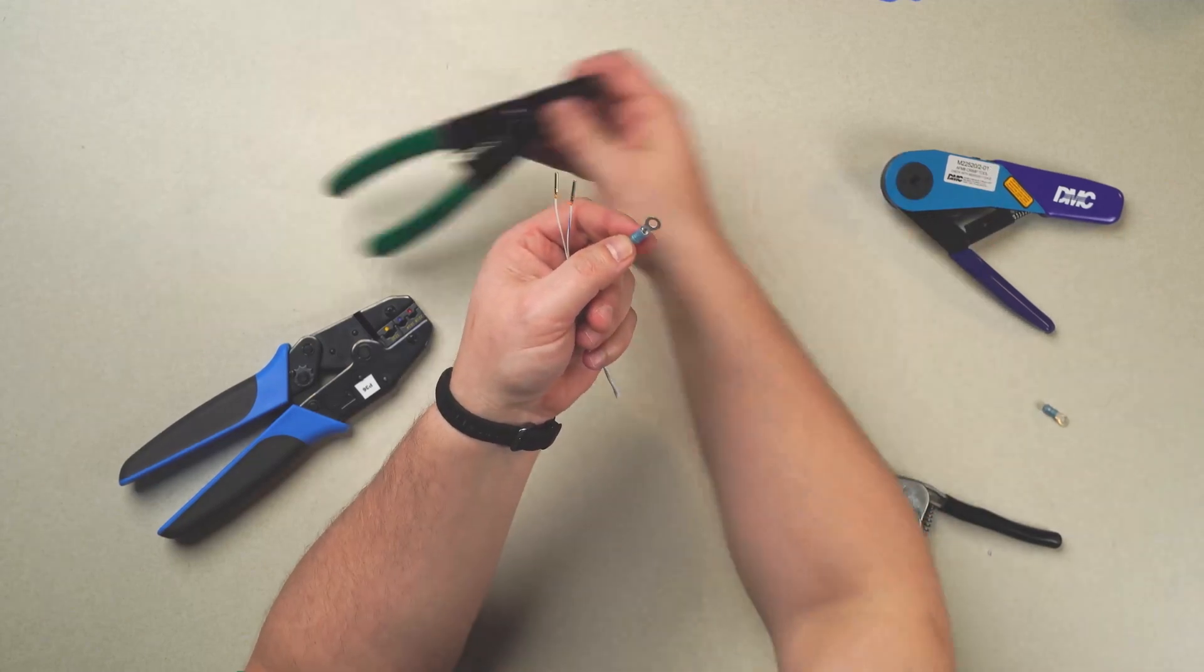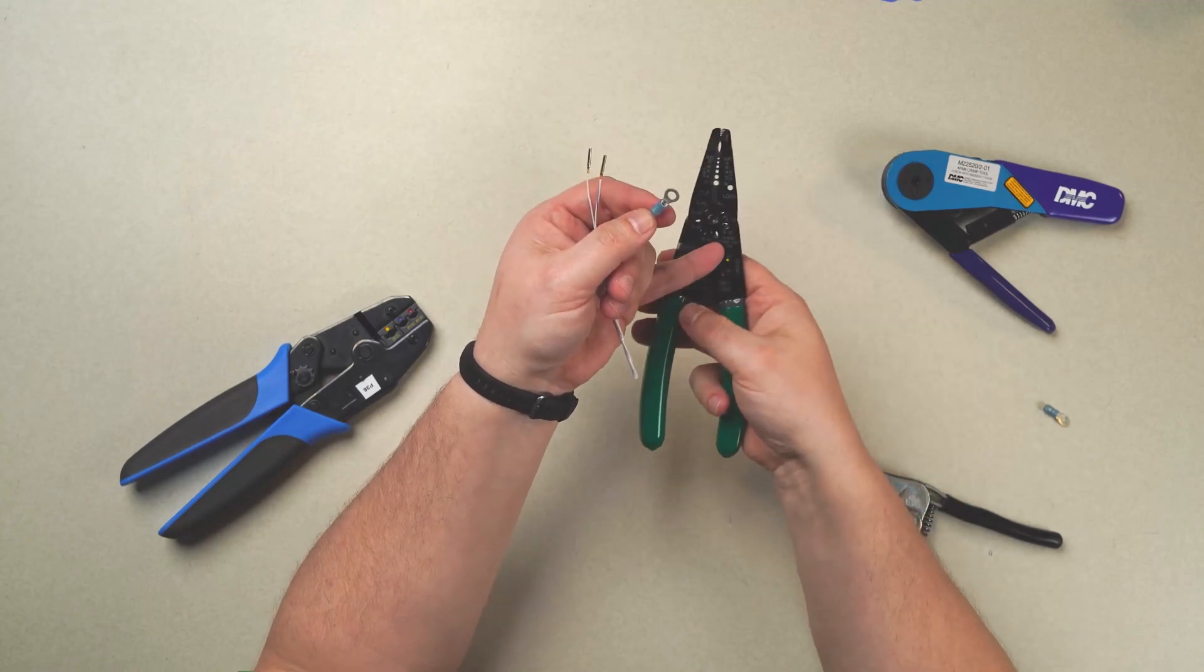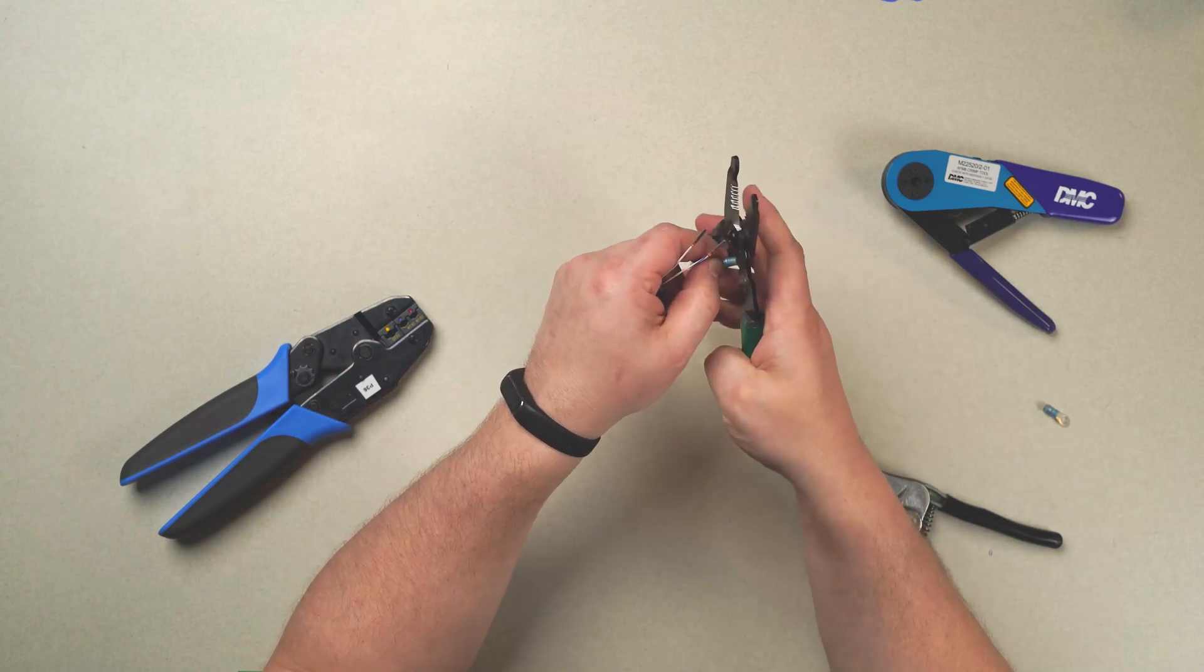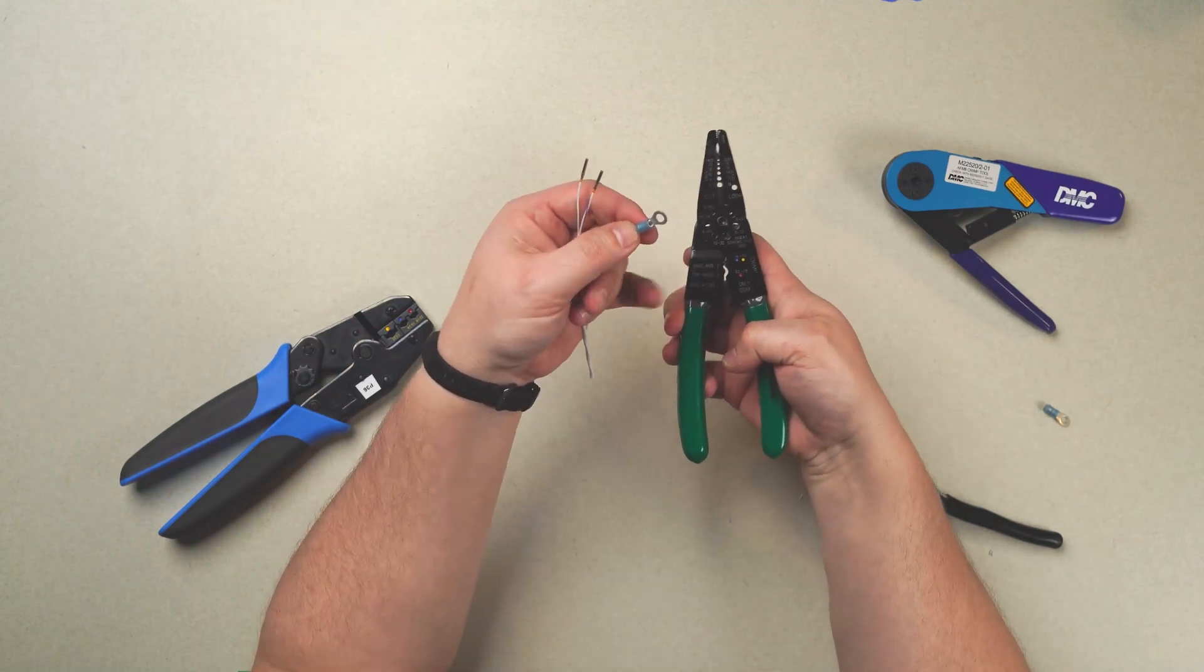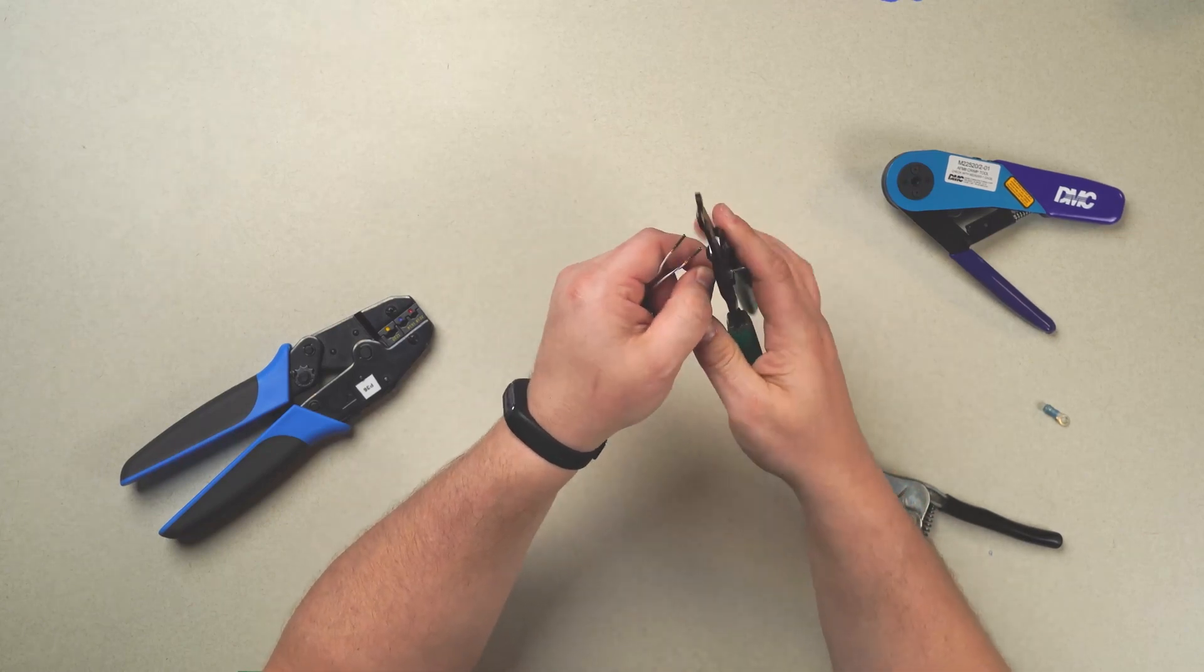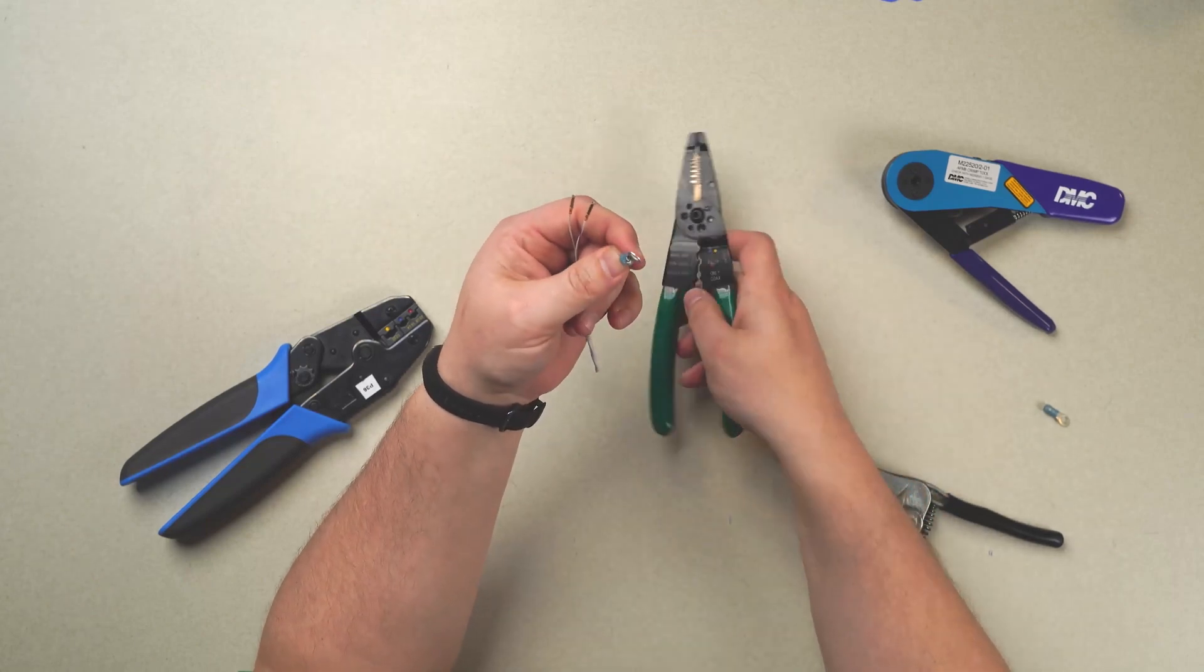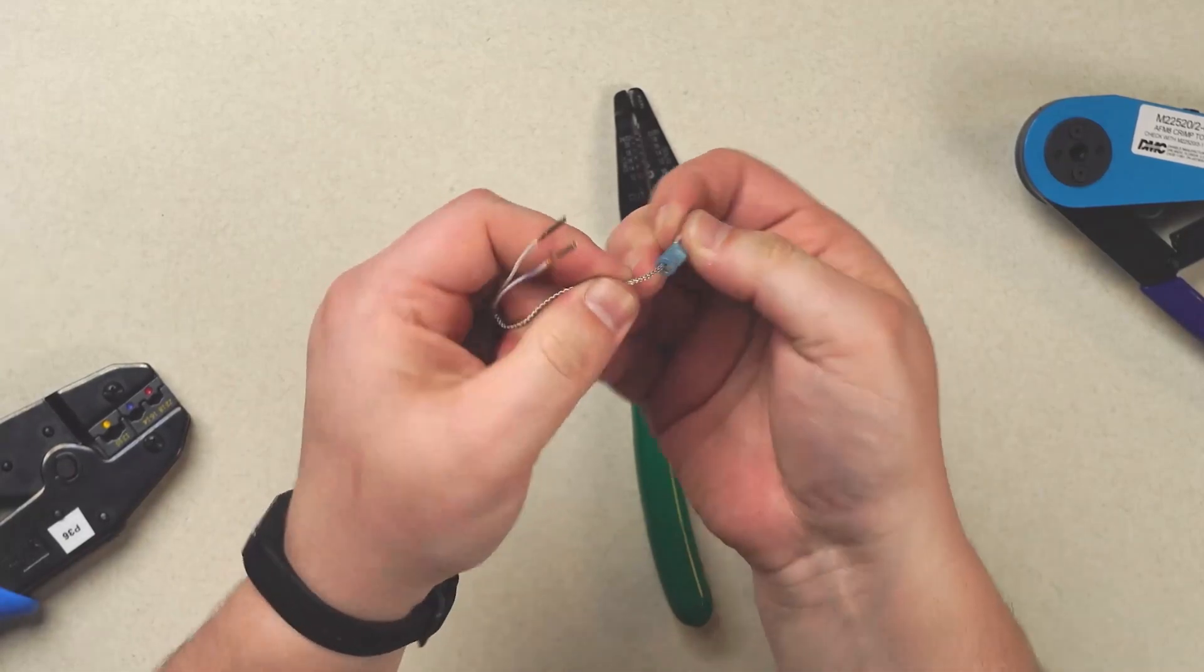And we essentially have two options available. We have the hardware store option, which we'll utilize. This is a blue sleeve. We'll utilize the blue crimping position. And we crimp right in the center, center mass. The reason this is not desirable is, as you can see, it really tears up the ring terminal. And it doesn't always give us the most firm fit.